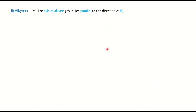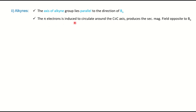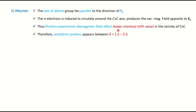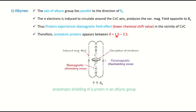Now we will discuss alkynes. The axis of the alkyne lies parallel to B0. Pi electrons are induced to circulate around the C≡C and produce a secondary magnetic field, as we noticed in alkene. The proton experiences a diamagnetic field in the vicinity of C≡C, so it shows a lower chemical shift value. The acetylenic proton therefore falls in the diamagnetic zone and shows a chemical shift value in the lower range of 1.5 to 3.5 ppm.